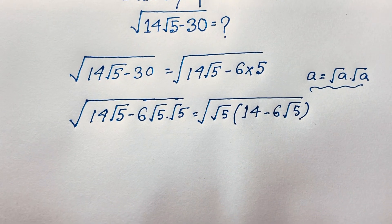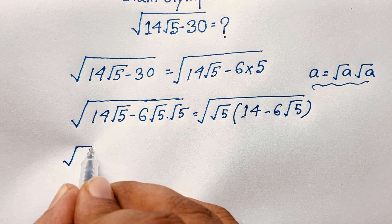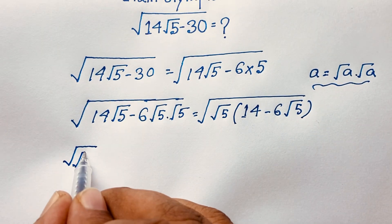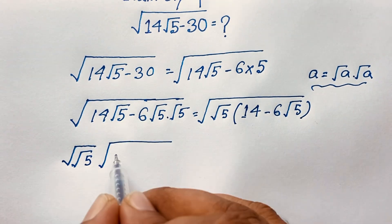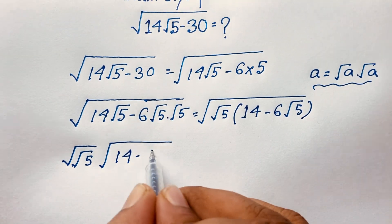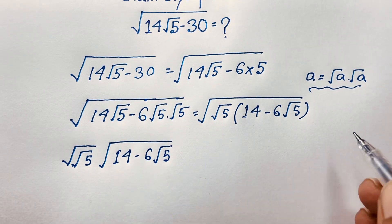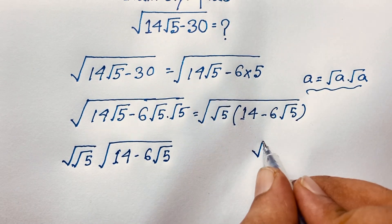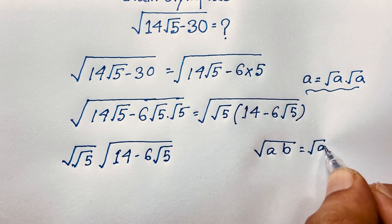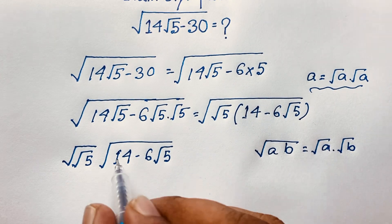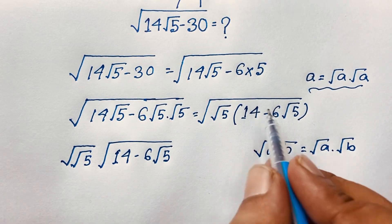So we now have: square root of √5 times (14 minus 6√5). We know that √(ab) equals √a times √b. Applying this rule here gives us √5 times √(14 minus 6√5).